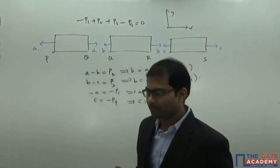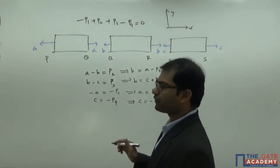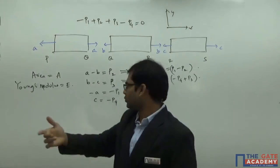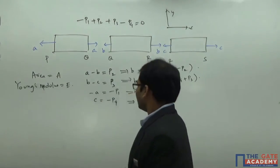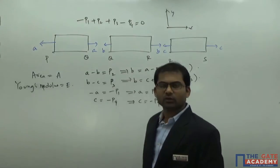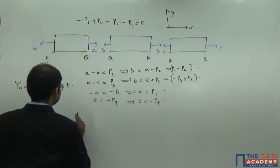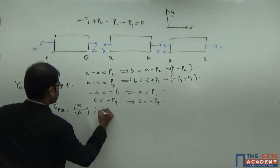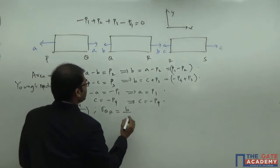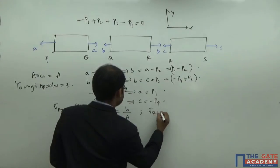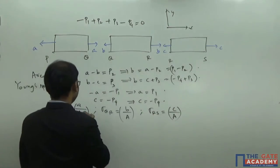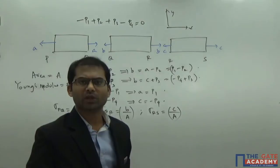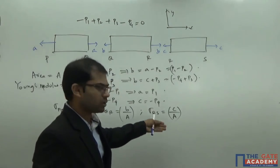Now let us find the value of stresses. For the whole prismatic bar, let us take the area of cross-section as A. Since it is a prismatic bar, A is constant and the Young's modulus E is the same throughout. Stress in PQ equals A divided by area of cross-section; stress in QR equals B divided by area of cross-section; stress in RS equals C divided by area of cross-section. Based upon the signs of A, B, and C, we decide whether the stress is tensile or compressive.